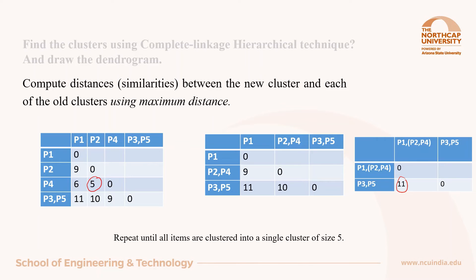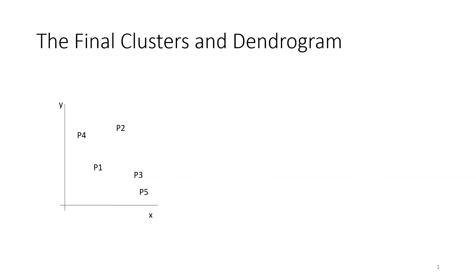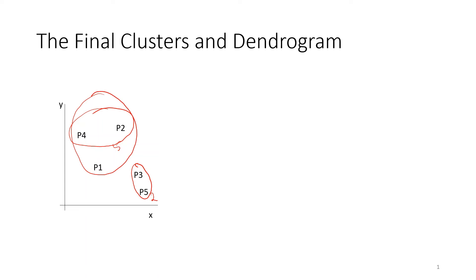Now at a distance of 11, all the clusters P1P2P4 and P3P5 will be merged as a single cluster of size 5. Finally, let us look at all the clusters created using this technique graphically in this 2D plane. We started with points P3 and P5 and merged them as one cluster at a distance of 2. Then P2 and P4 were merged together at a distance of 5. Then P1 was merged with this cluster at a distance of 9, and ultimately all clusters were merged together at a distance of 11.